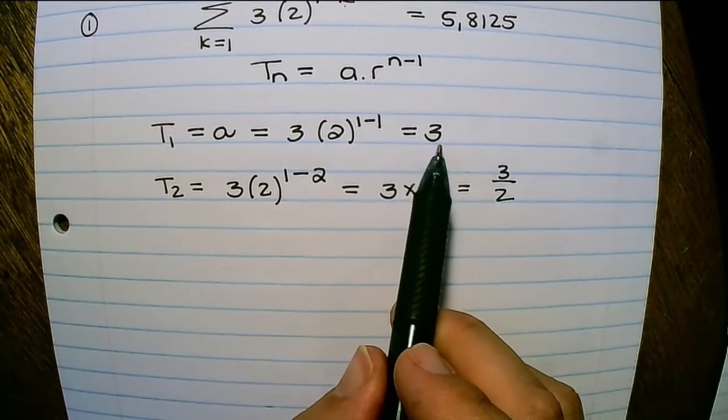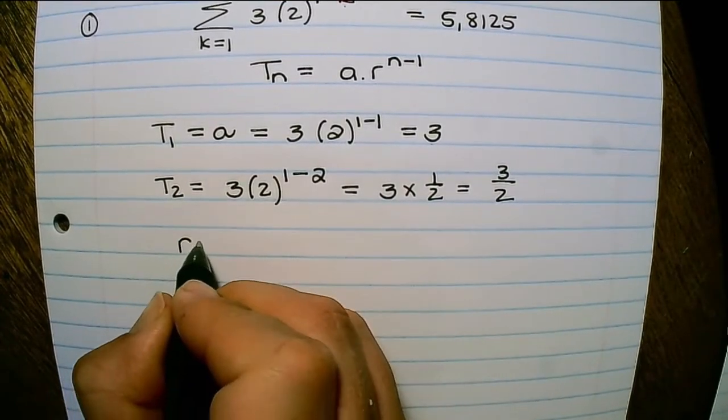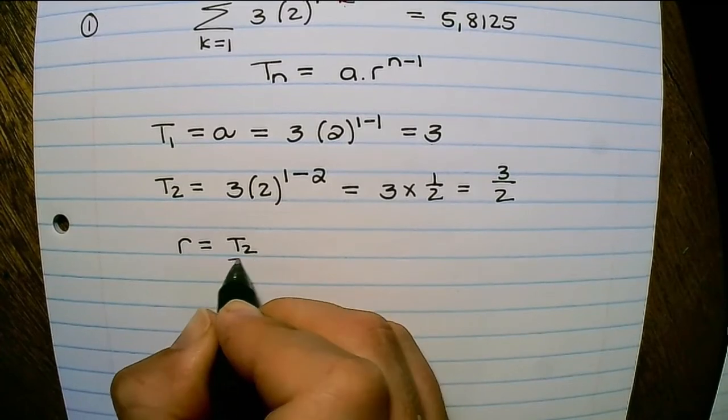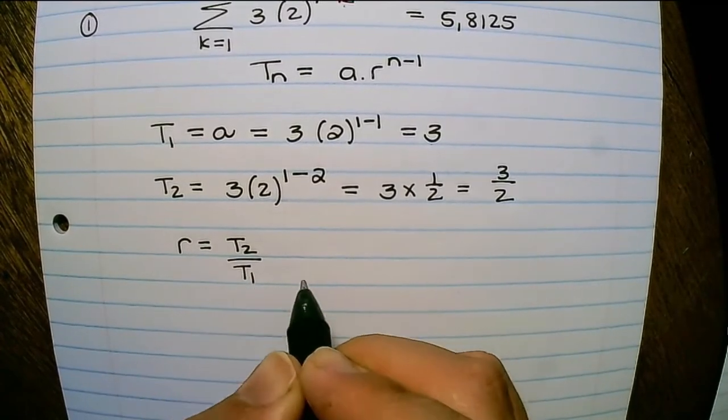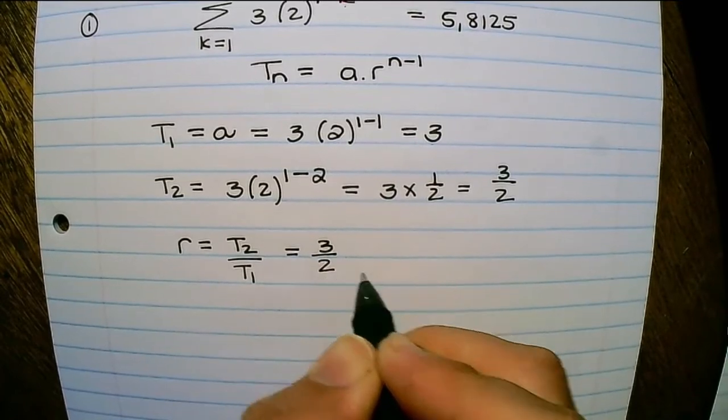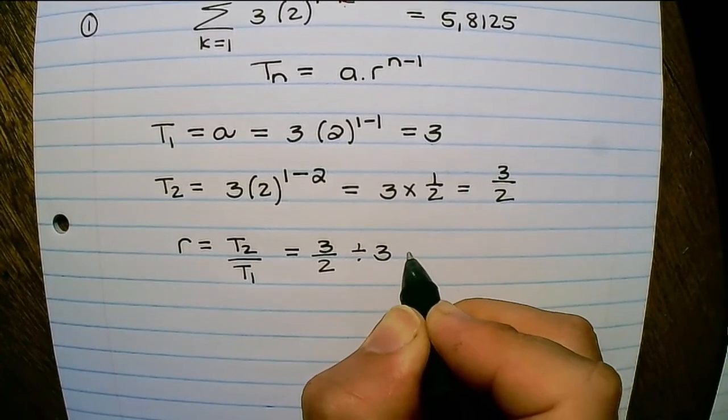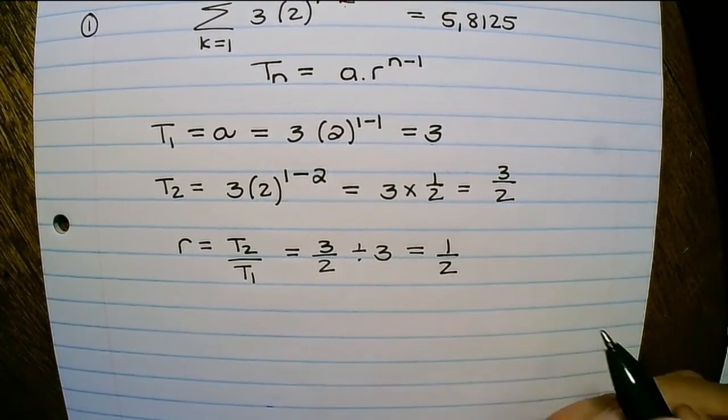Now that I have the first term and the second term, I can determine the ratio. The ratio is the second term divided by the first term. So that is 3 over 2, or 1 and a half, divided by 3. Therefore, the ratio is equal to a half.